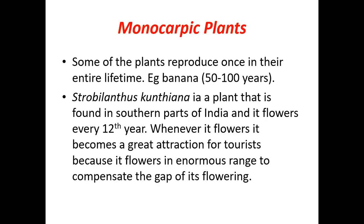Strobilanthus kunthiana, also called Neelakurinji, is a perennial polycarpic plant, not monocarpic. It flowers many times in its lifetime, but flowers only once every twelve years. When it flowers, it produces an enormous amount of beautiful purple-pinkish-blue flowers everywhere it is present, making it a great tourist attraction.